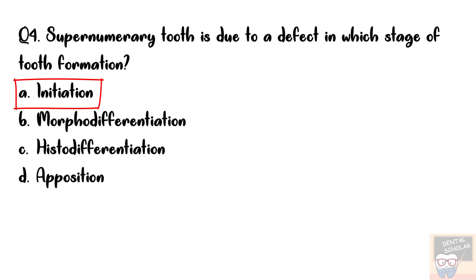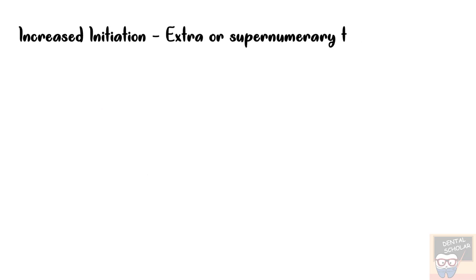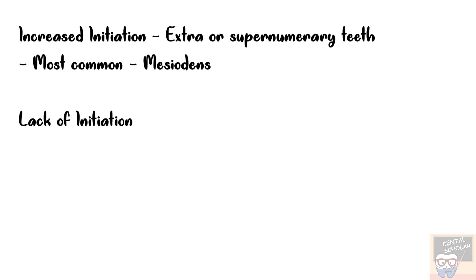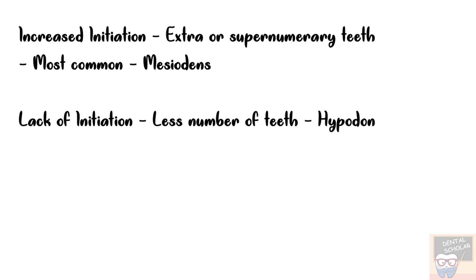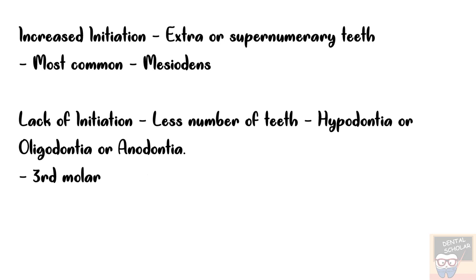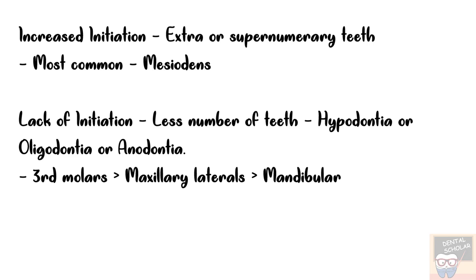Initiation implies formation of the tooth bud. When there is an increase in initiation, extra or supernumerary teeth are formed. The most common supernumerary tooth is mesiodens. A lack of initiation leads to fewer teeth, which may result in hypodontia, oligodontia, or anodontia. The most common missing teeth are third molars, followed by maxillary laterals, followed by mandibular second premolars.